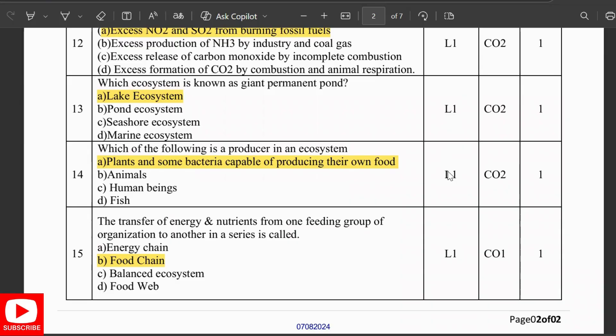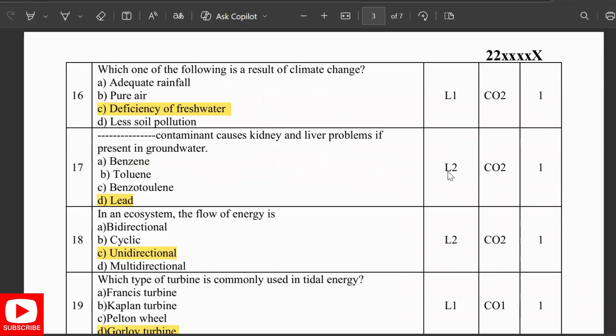Which of the following is a producer in an ecosystem? Plants and some bacteria are capable of producing their own food. The transfer of energy and nutrients from one feeding group of organisms to another in a series is called a food chain. Which of the following is a result of climate change? Deficiency of fresh water. Light contaminants cause kidney and liver problems if present in groundwater.